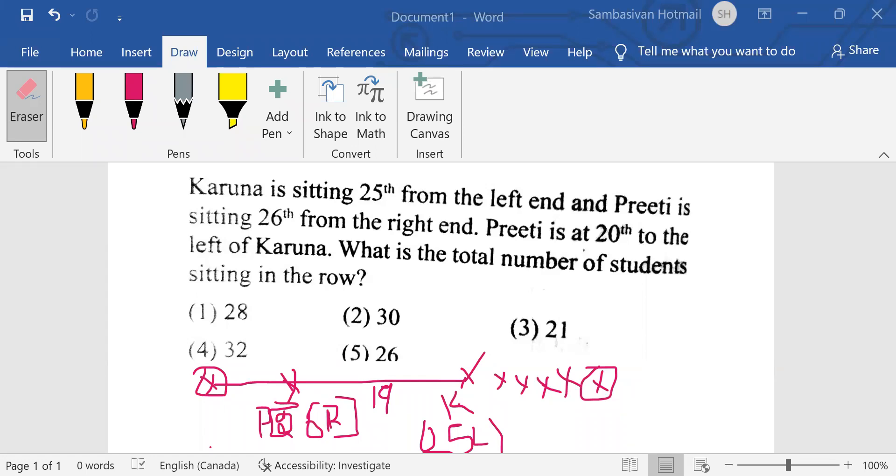I'm resuming recording. Karuna is sitting 25th from the left end and Priti is sitting 26th from the right end. Priti is at 20th left of Karuna. What is the total number of students sitting in the row?